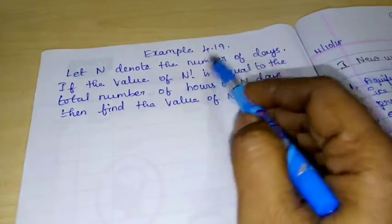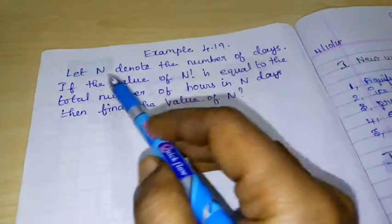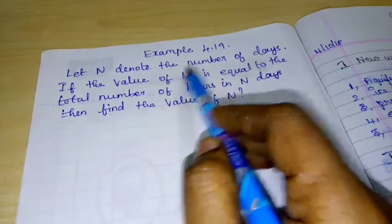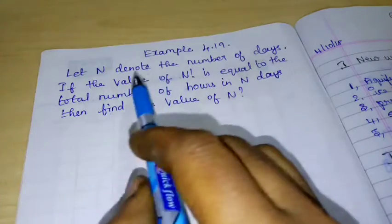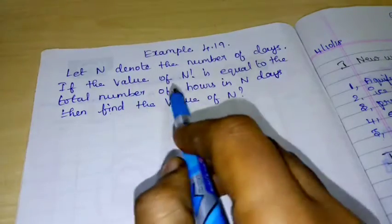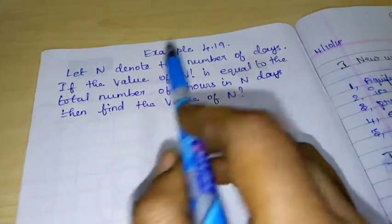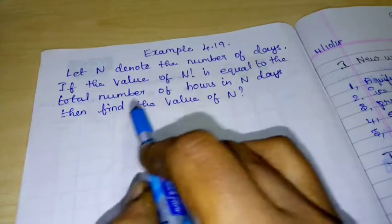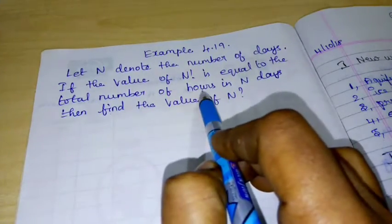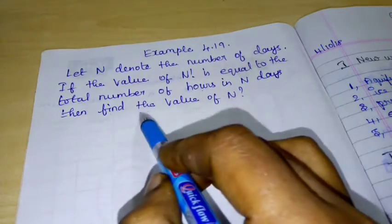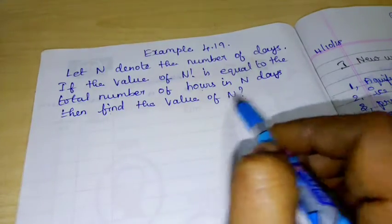Let's try a map slide. Example 4.19. Let n denote the number of days. If the value of n factorial is equal to the total number of hours in n days, then find the value of n.